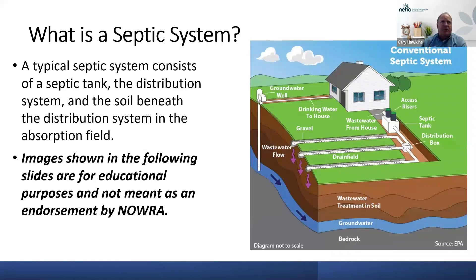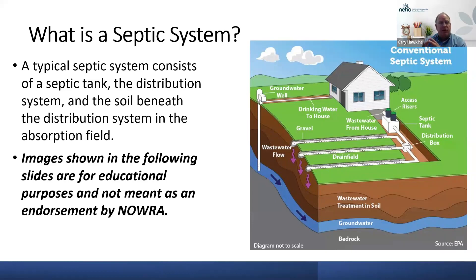This picture shows another typical system. This image is from EPA, but typically it's going to be your tank and the distribution system. The soil is a big part of that cleaning process of this wastewater once it is treated in the tank and gets out into the distribution system. Many of these images are from EPA or other sources, used here simply because they show really good pictures of what we're trying to demonstrate today.